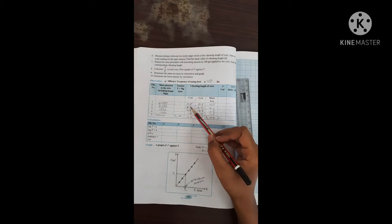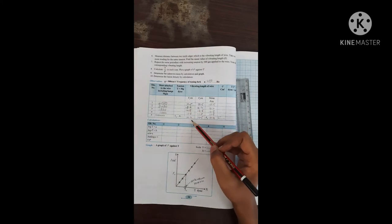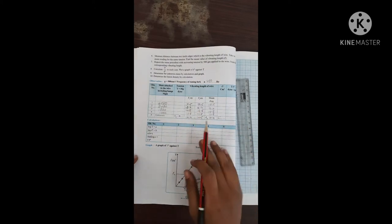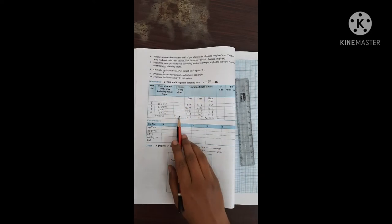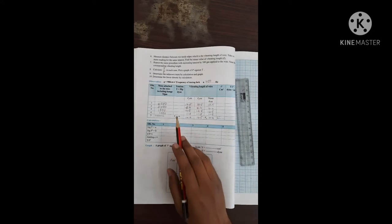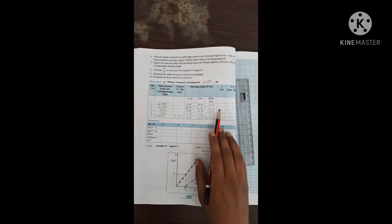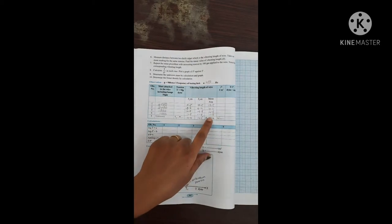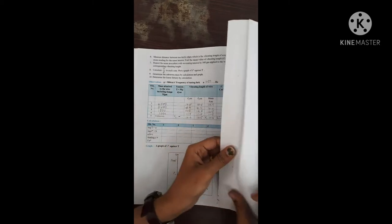Now I have written the readings. What you have to do is calculate this tension, then find out the square of these things. From where will you find out? You have backside they have given you the squares.